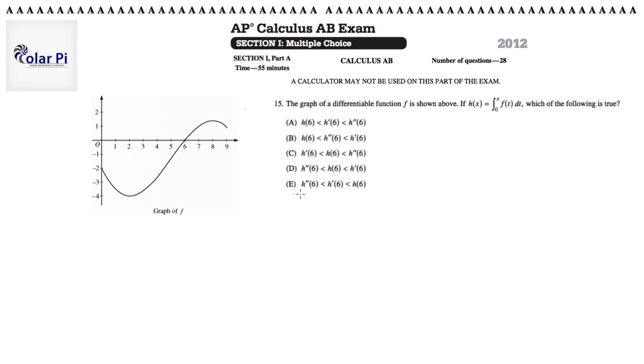So if you quickly look at all the answer choices, they're all comparing the values of h to the value of h prime to the value of h double prime, all at 6. So then, this is not so bad, right?